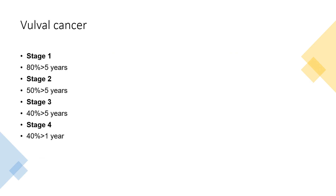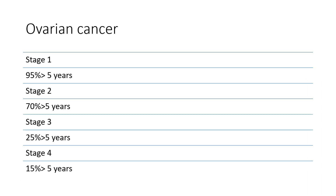For vulval cancer: stage 1 is 80% over 5 years, stage 2 is 50%, stage 3 is 40%, and stage 4 is 40% over 1 year — apparently there are no 5-year stats released for stage 4 vulval cancer. For ovarian cancer: stage 1 is 95% over 5 years or more, stage 2 is 70%, stage 3 is 25%, and stage 4 is 15% over 5 years or more.